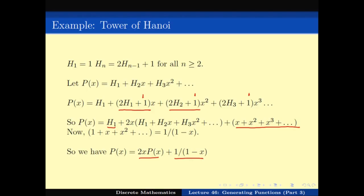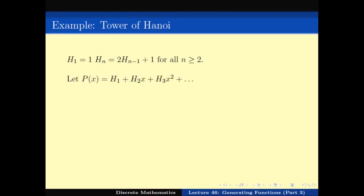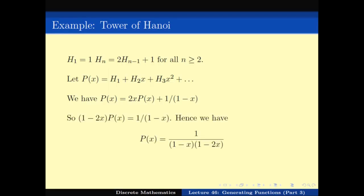This is exactly the kind of place we want to be. We have P(x) = 2x * P(x) + 1/(1-x), which gives us P(x) = 1 / ((1-x)(1-2x)). This is very useful because now we have written the polynomial P(x) as a closed-form function with no recurrence. All we need to do is understand what the coefficient of x^n is in this function.